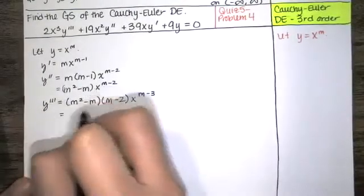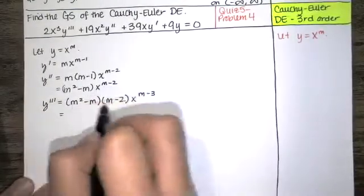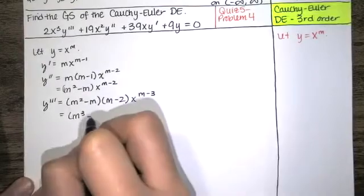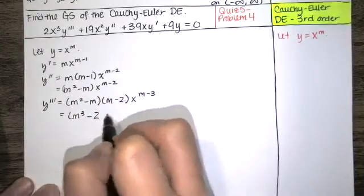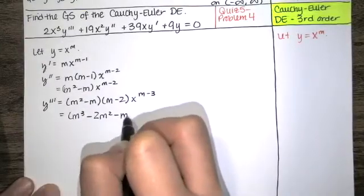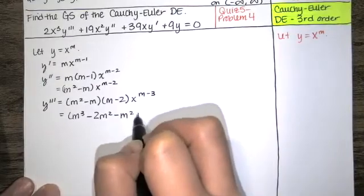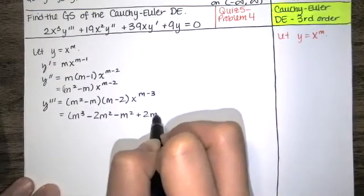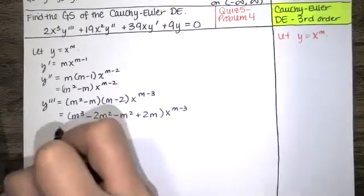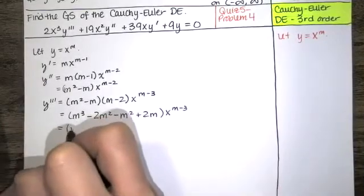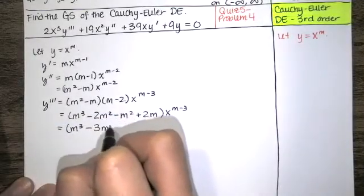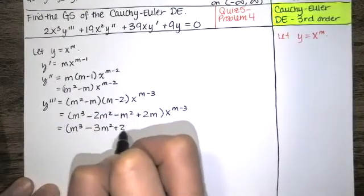If you distribute, first times first is m cubed, outer times outer is minus 2m squared, inner times inner is another minus m squared, and last times last is positive 2m. So this becomes m cubed minus 3m squared plus 2m.